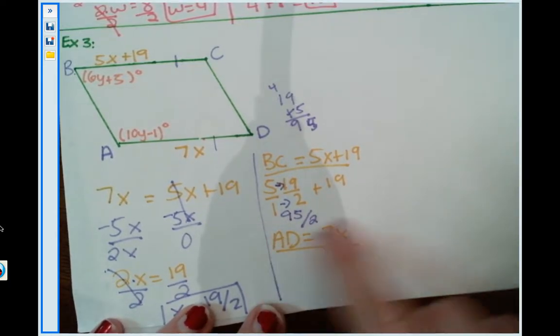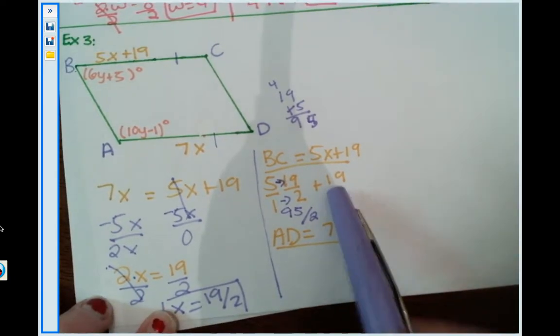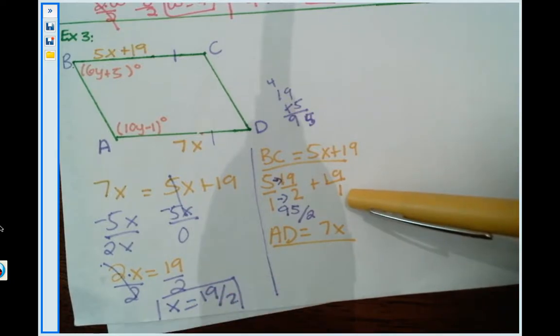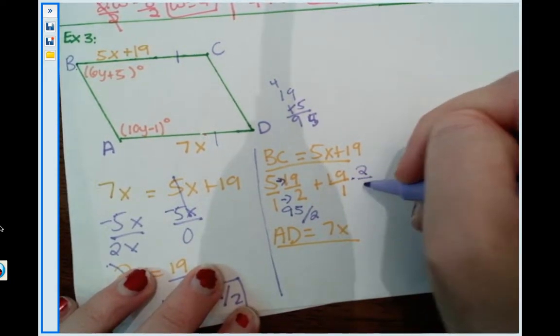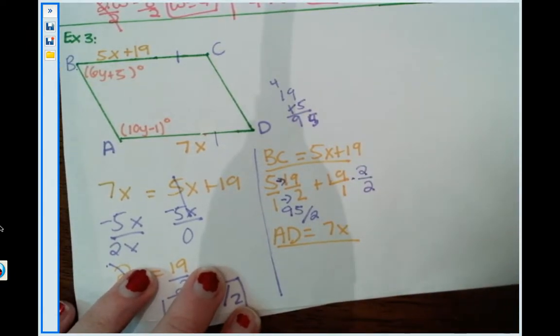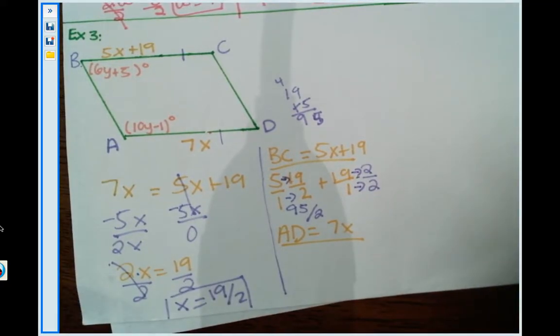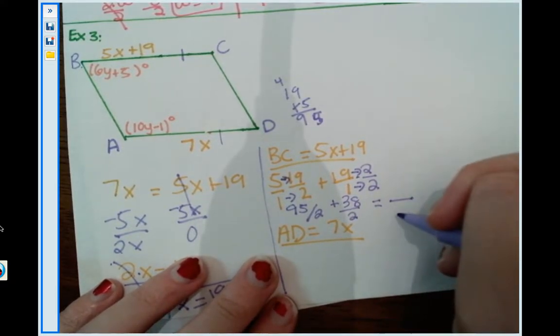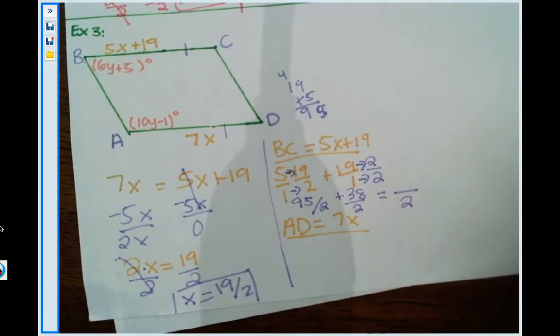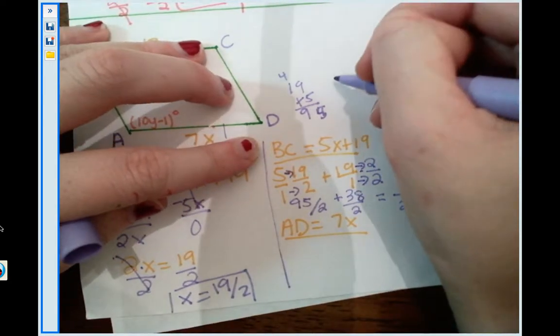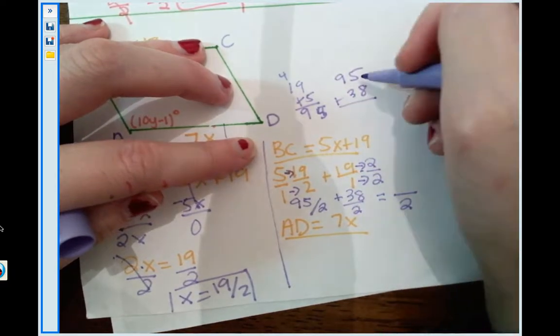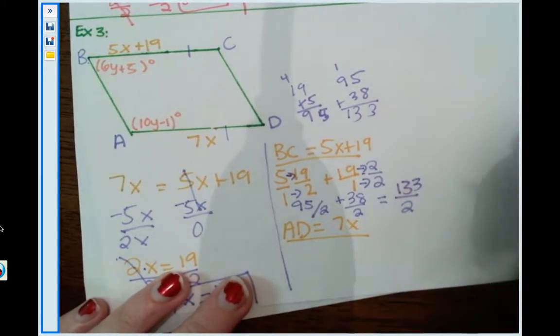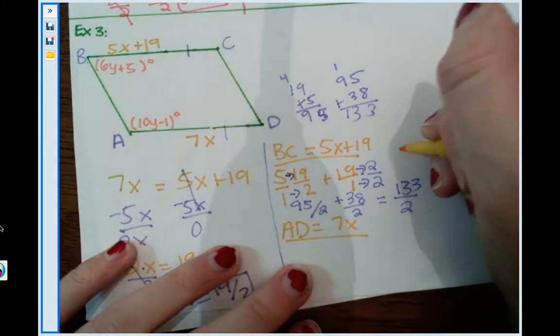But if you remember, in order to add fractions, we must have a common denominator. So I must make 19 be over 2 somehow. So it secretly is over 1. So what can I multiply 1 by to make it 2? It is 2. And if I multiply it to the denominator, I've got to multiply it to the numerator. So 19 times 2 gives me 38. And 1 times 2 gives me 2. So now I simply add my numerators. So 95 plus 38 is 133. So BC is 133 over 2.